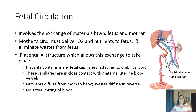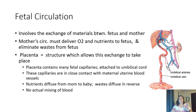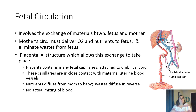Nutrients diffuse from mom to baby, and waste diffuses in reverse, following the rules of diffusion — moving from high to low concentration. High oxygen moves from mom to baby; carbon dioxide, high in the baby, moves to the low area in the mom. There's no actual mixing of blood. The only time blood mixes is during childbirth when the placenta pulls away, damaging those vessels. In the normal process of the developing baby, there's no actual contact between mother's blood and baby's blood.